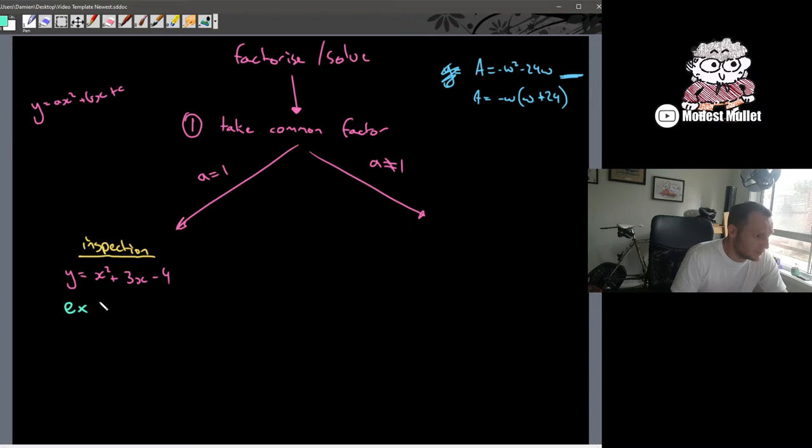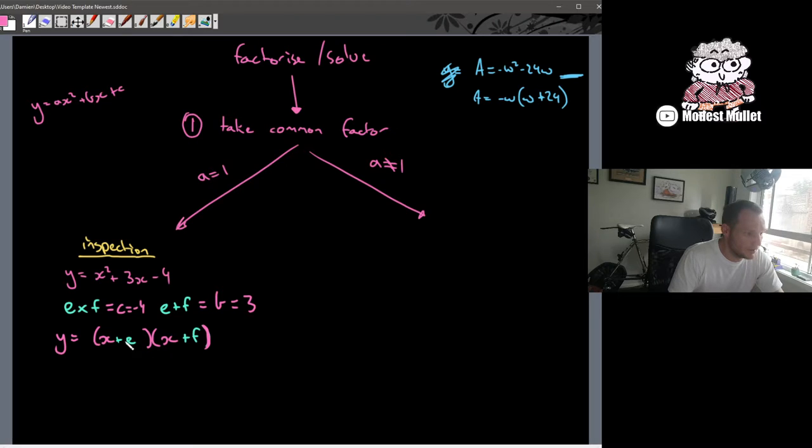We need two numbers where e times f is equal to c, the constant on the end which in this case is negative 4. And then e plus f is equal to b value which in this case is 3. Those are our two magic numbers and that always follows that y is equal to x plus e, x plus f. That's our inspection. Two numbers that multiply to give the last number, add to give the middle number.